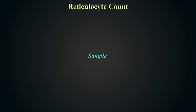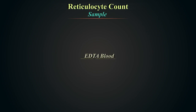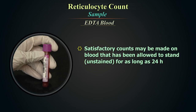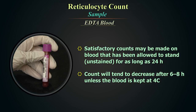The preferred sample for reticulocyte count is EDTA anticoagulated blood. Satisfactory counts may be made on blood that has been allowed to stand unstained for as long as 24 hours, although the count will tend to decrease after 6 to 8 hours unless the blood is kept at 4 degrees centigrade.